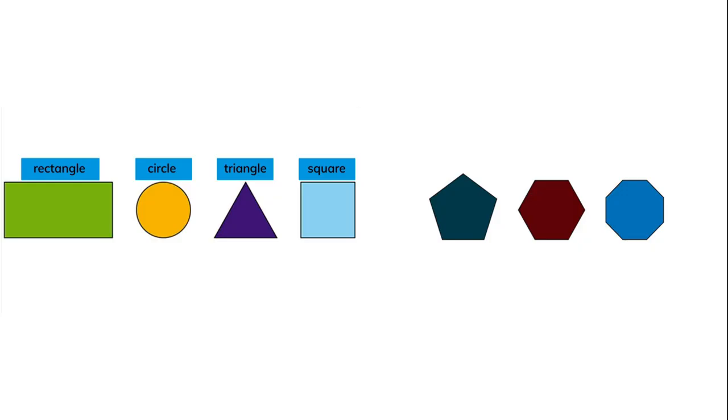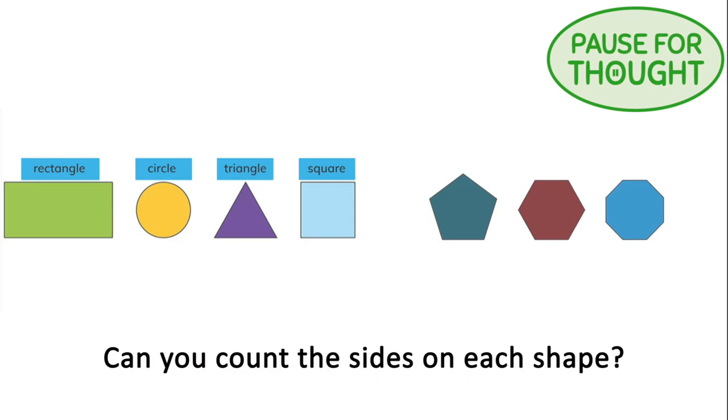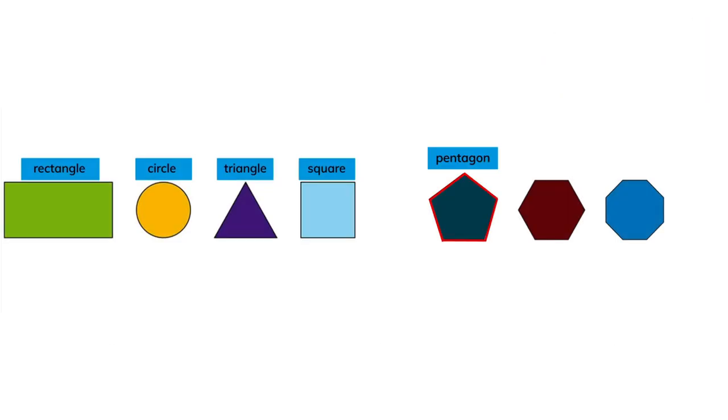Let's look at three more 2D shapes. Can you count the sides on each shape? The pentagon is a 2D shape that has five sides. The hexagon is a 2D shape with six sides. The octagon is a 2D shape that has eight sides.